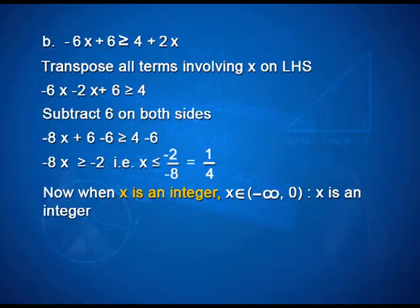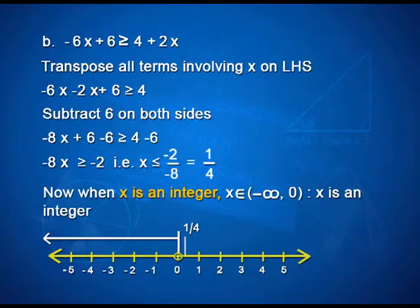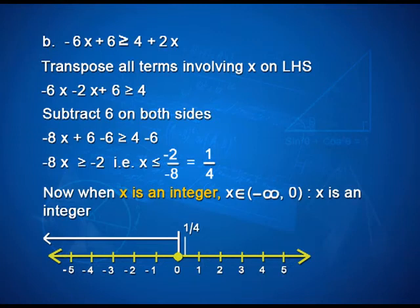When x is an integer, x belongs to the interval minus infinity to 0, open bracket at minus infinity and closed bracket at 0. Recall that minus infinity will never have a closed bracket. In set form, the answer is as shown on the screen. On the number line, there is a colored circle at point 0 and the arrowhead pointing on the left hand side, because we are talking about integers on the left hand side of 1 by 4.